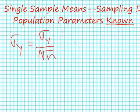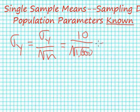And in the examples we've used, we've let sigma sub y be equal to 10. And in this case, I'm going to select a sample size of 1,600 and get a standard error of 0.25.